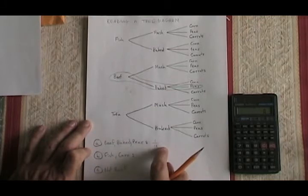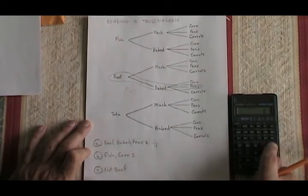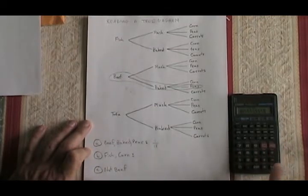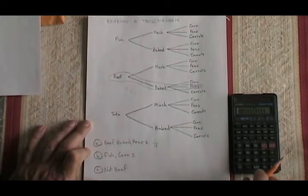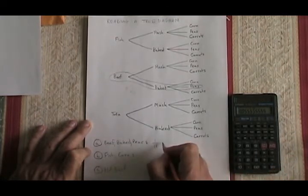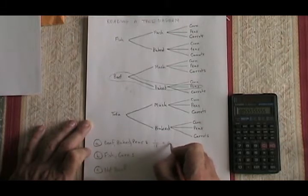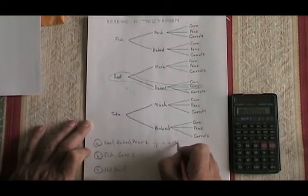We can simplify this fraction and convert it to a decimal. One divided by 18 is 0.055, the five repeats. So rounded to the nearest thousandth, it would be 0.056.